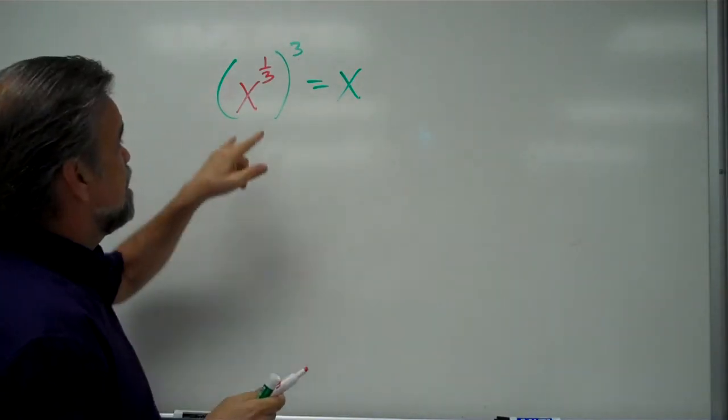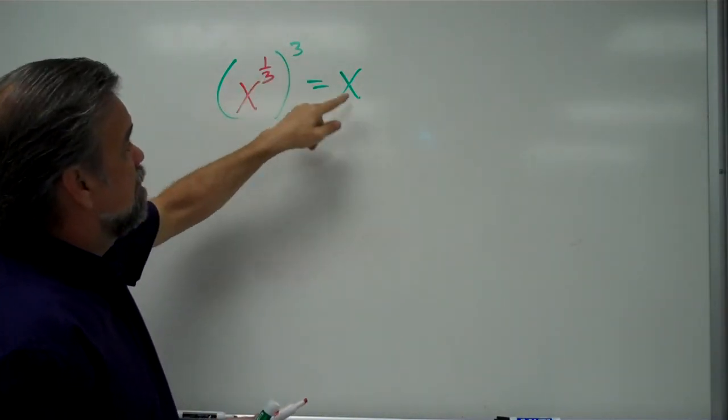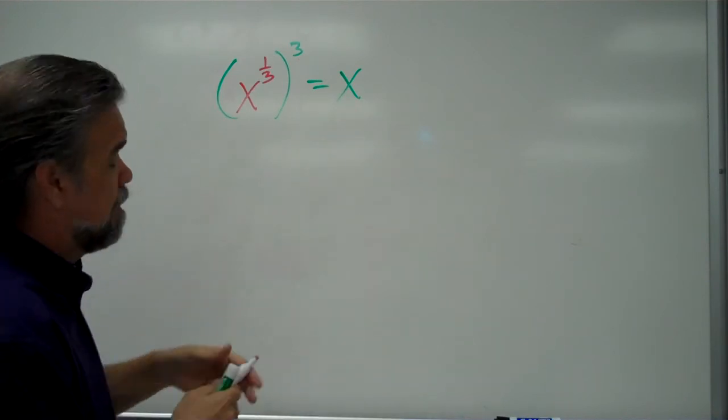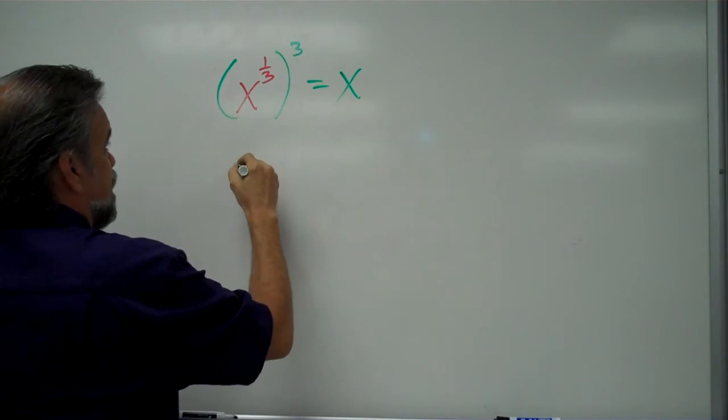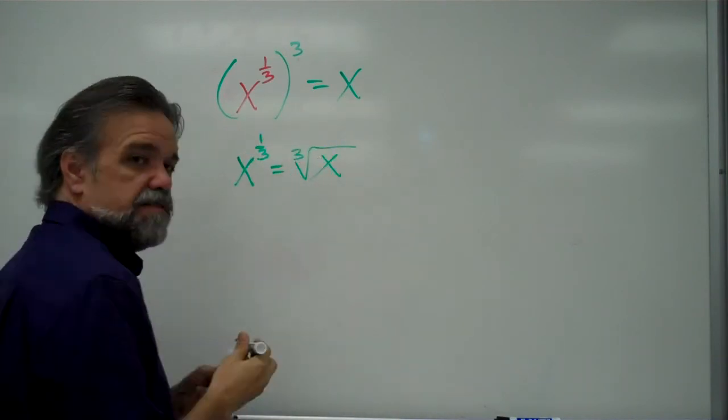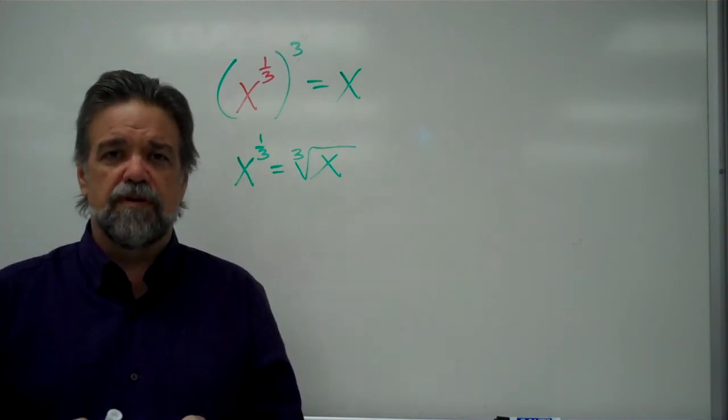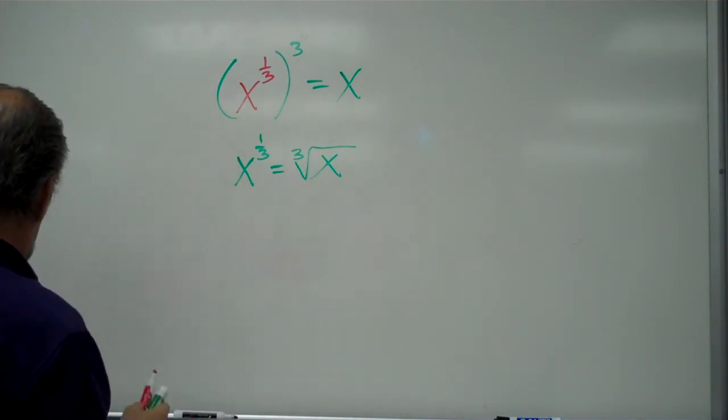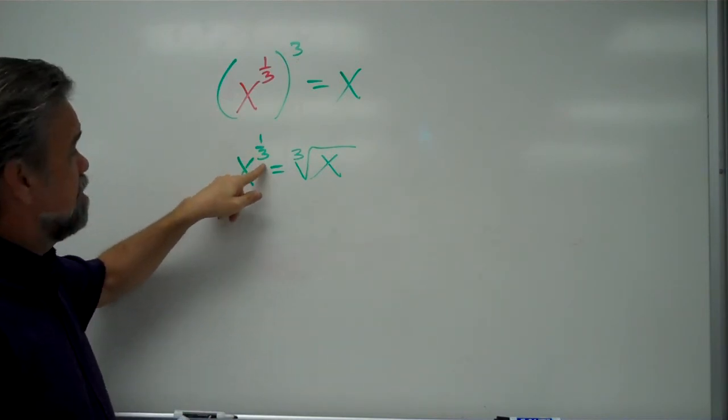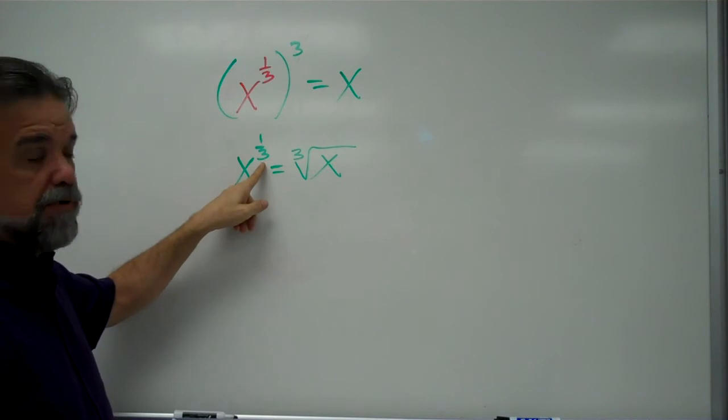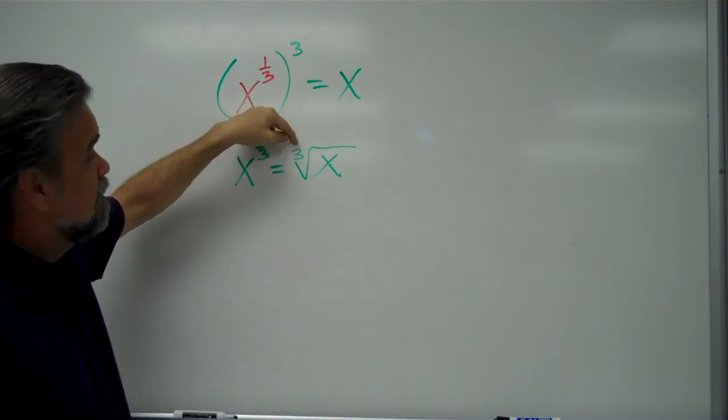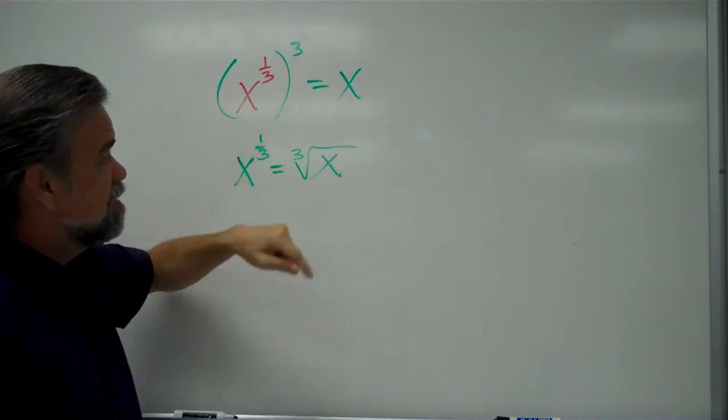So that means I've taken this thing to the third power, and it gives me x. That's the definition of a cubed root. So x to the 1 third power is the cubed root of x. And let me give you a little vocabulary lesson real fast in case you've forgotten this. We know that this is the base. This is the exponent, right? But over on this side of things, this thing right here, that's the index.